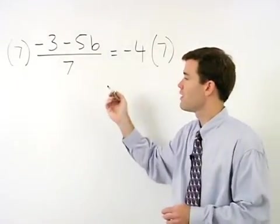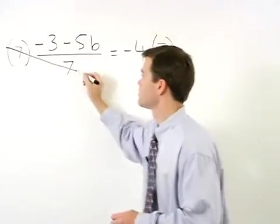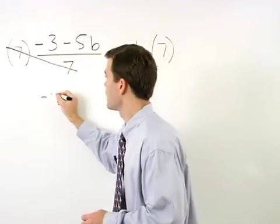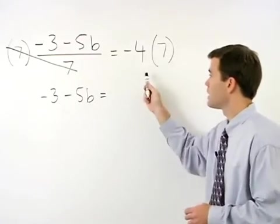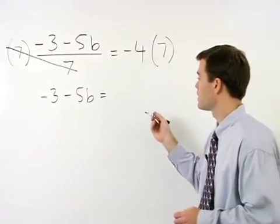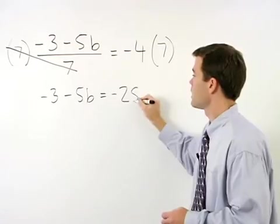On the left, our 7's cancel, and we have negative 3 minus 5b. On the right, negative 4 times 7 is negative 28.